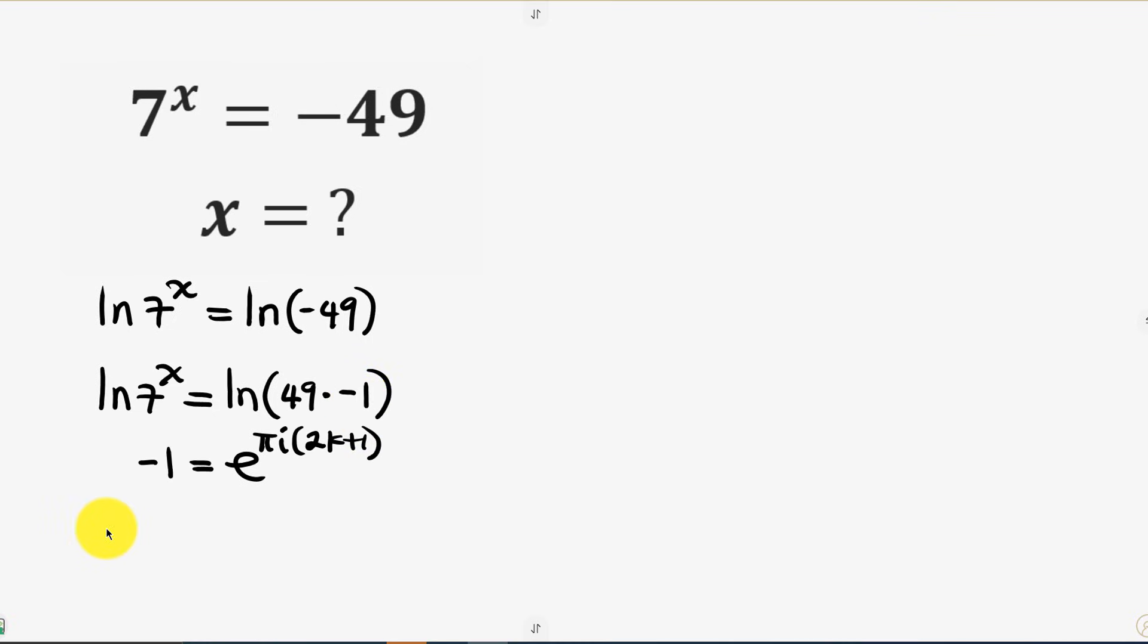So our new expression becomes ln of 7^x equal to ln of 49 times e to the power of pi i times (2k + 1). Now let's close our brackets.